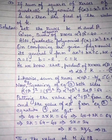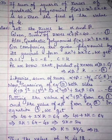2 here is multiplied, so after the equal sign it will become divided. 24 divided by 2 is equal to 12. Thus the value of K is equal to 12.